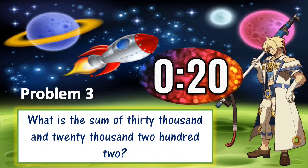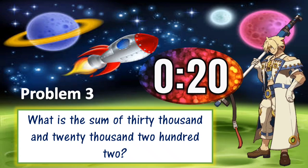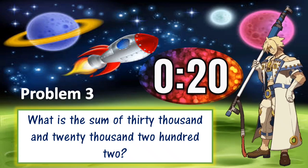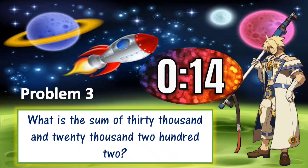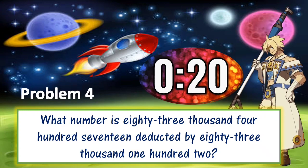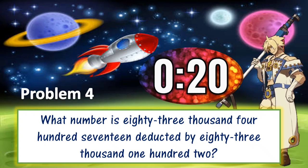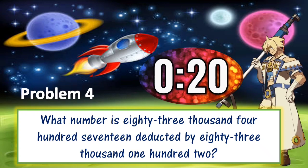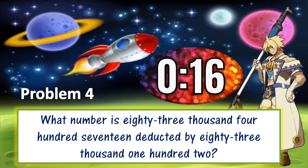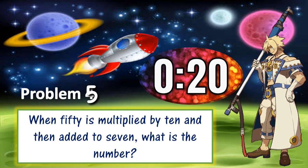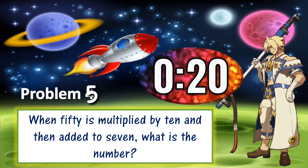Problem 3: What is the sum of 30,000 and 20,202? Problem 4: What number is 83,417 deducted by 83,102? Problem 5: When 50 is multiplied by 10 and then added to 7, what is the number?